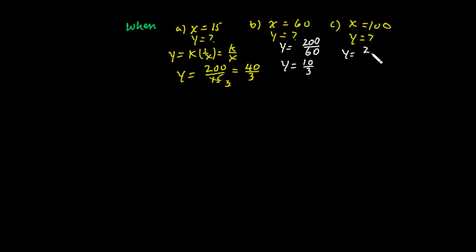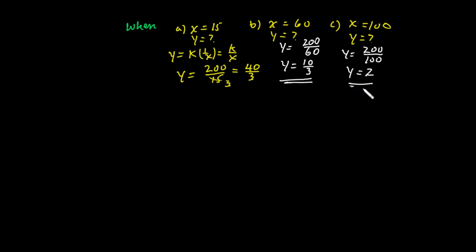When x equals 60, y equals 200 over 60. When x equals 100, y equals 200 over 100, which equals 2. We have calculated the value of y for each x value. See you next time.